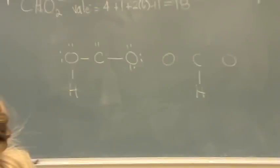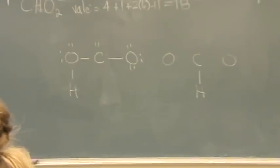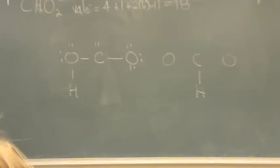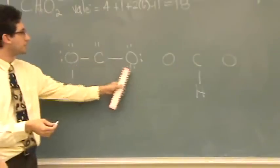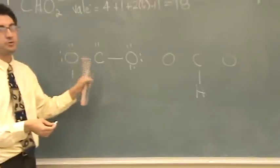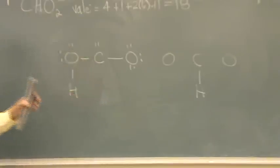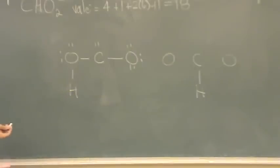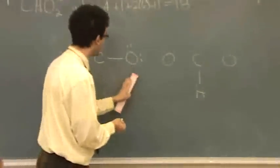Now you ask yourself: does anything not have an octet? Carbon doesn't. Oxygens do — they're just fine. So what I want to do when carbon doesn't have an octet is go to one of its neighbors, remove one of the lone pairs, and make a double bond. Which oxygen do you want to go to, right or left? Doesn't matter — now does everything have an octet?